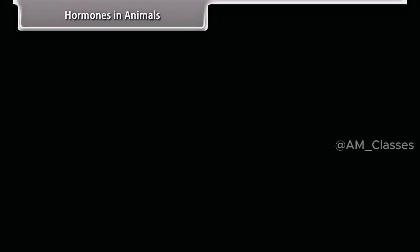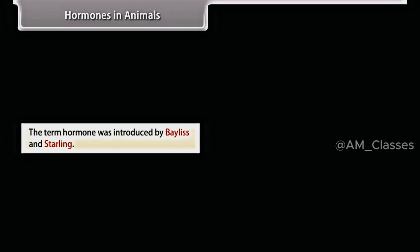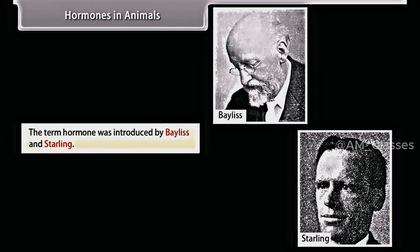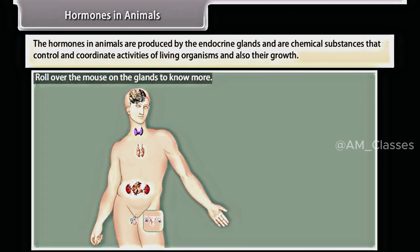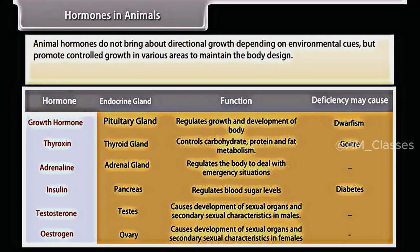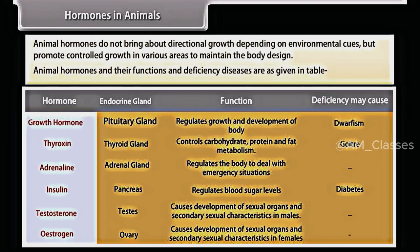The term hormone was introduced by Bayliss and Starling. Hormones in animals are produced by the endocrine glands and are chemical substances that control and coordinate activities of living organisms and their growth. Animal hormones do not bring about directional growth depending on environmental cues, but promote controlled growth in various areas to maintain the body design. Animal hormones and their functions and deficiency diseases are as given in the table.